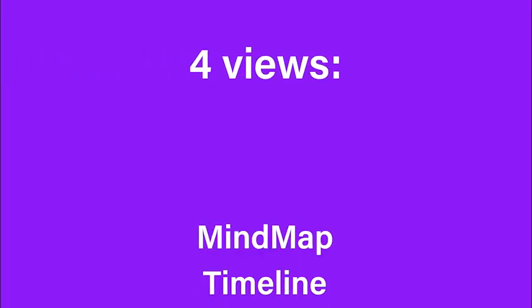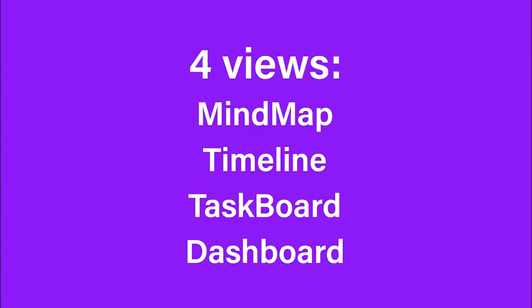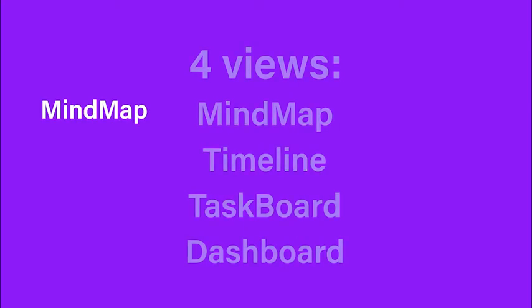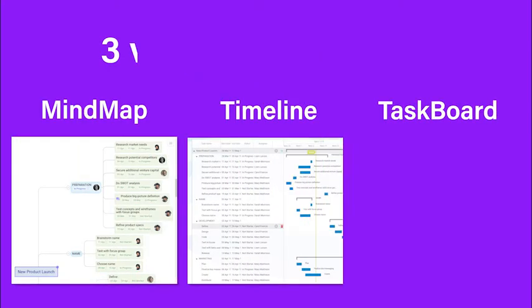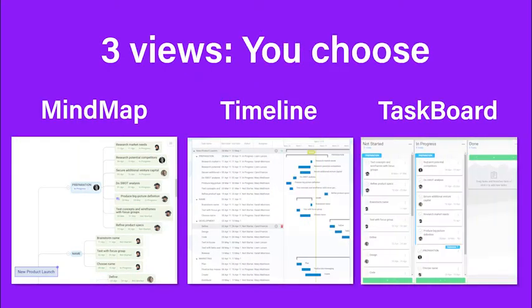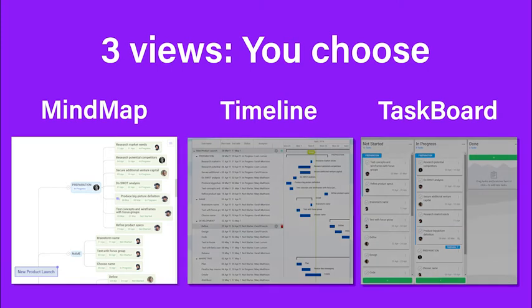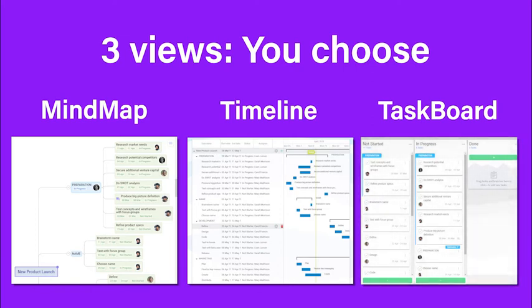MindGenius online gives you four views. You can build your project using three of those views: MindMap, Timeline, or TaskBoard. The MindMap is generally best for starting out a project, but you could start in the Timeline view or the TaskBoard. It's up to you.